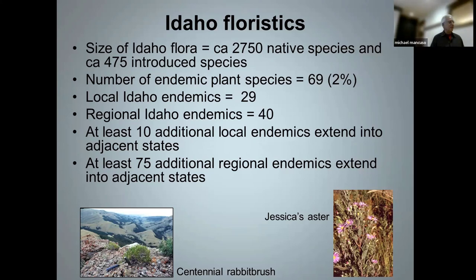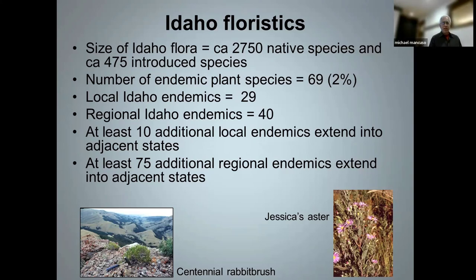There are at least 75 additional regional endemics that occur in Idaho and extend to adjacent states. These are plants with a greater than 25-mile distribution radius, up to about a hundred-mile distribution radius. Many of the Palouse endemics fall into this category.